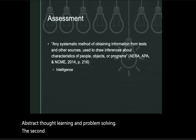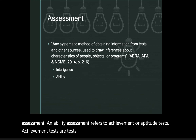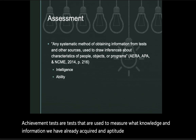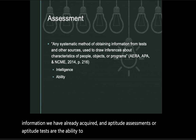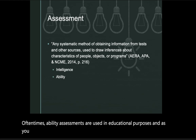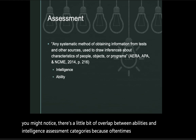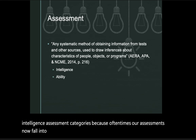The second common category is ability assessment, which refers to achievement or aptitude tests. Achievement tests measure knowledge and information already acquired, while aptitude tests assess the ability to acquire new information. Ability assessments are often used for educational purposes, and there is some overlap between ability and intelligence assessment categories.